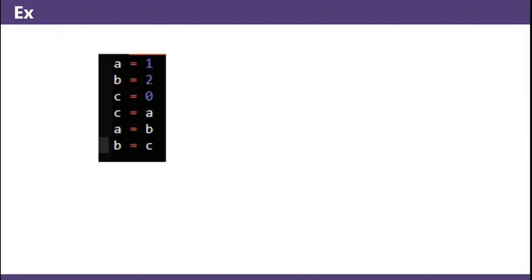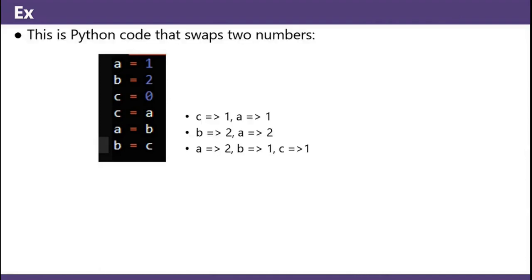Here's another example: a equals 1, b equals 2, c equals 0. Copy a's value into c, copy b's value into a, copy c's value into b. This is code that swaps two numbers.